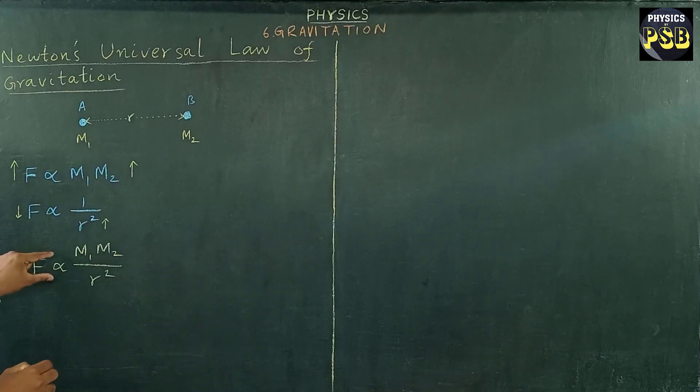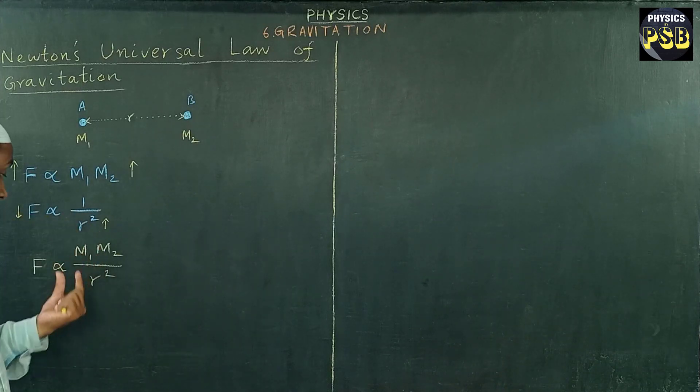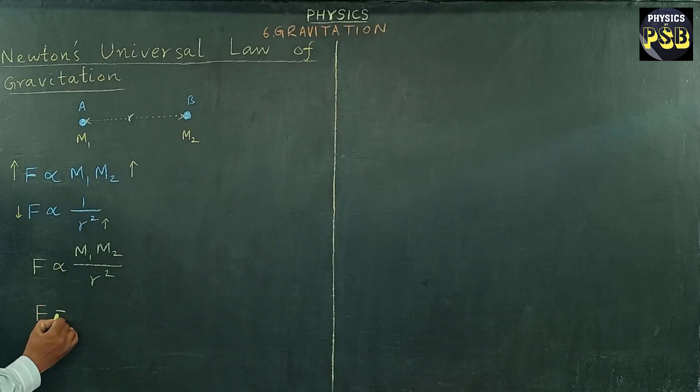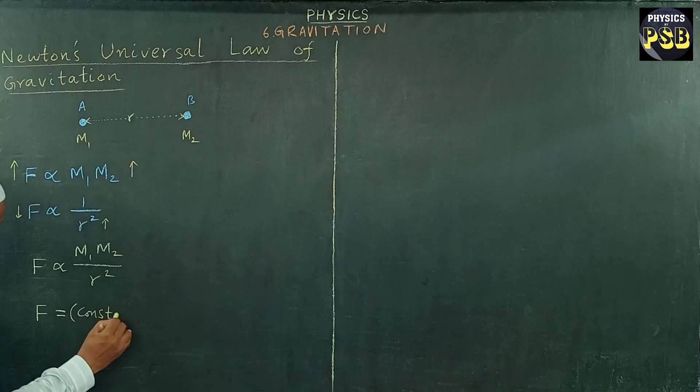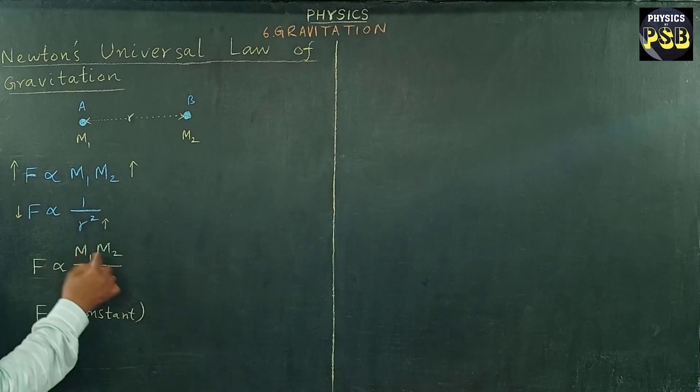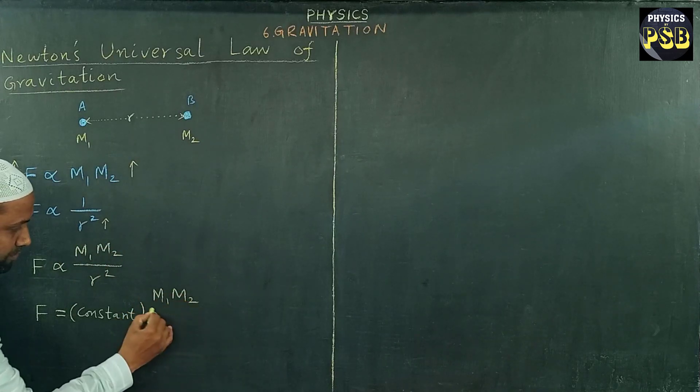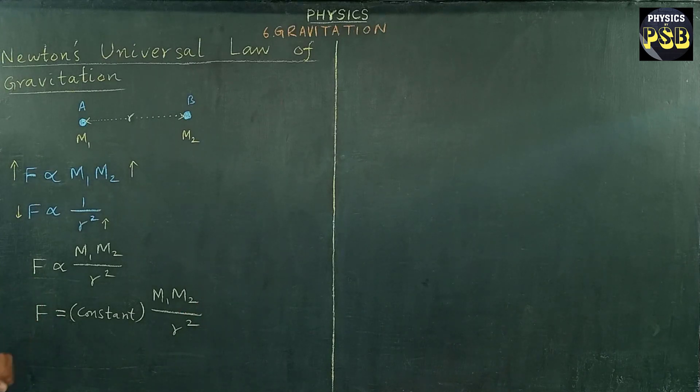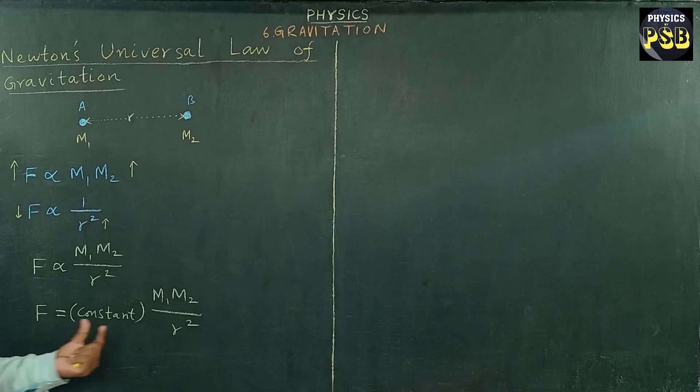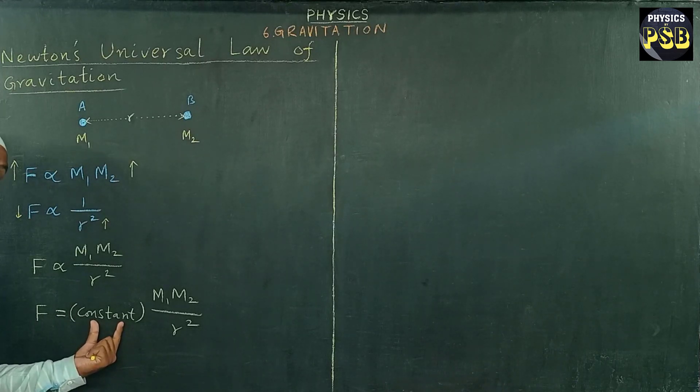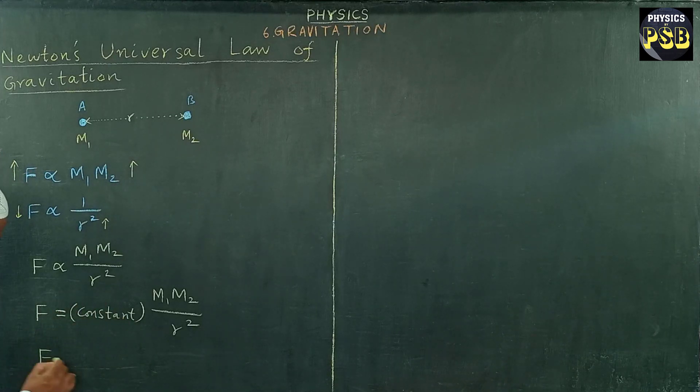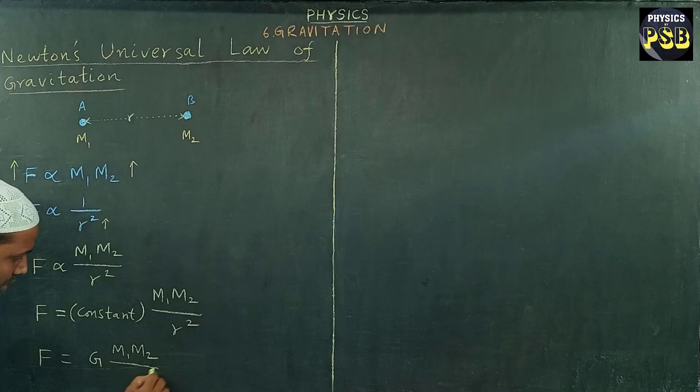When we remove proportionality, we have to include a constant along with equal to sign. So I am going to remove this proportionality, then the place of proportionality I use equal to sign, then I need to include a constant here. To make my work easy, I am going to give some name to this constant. This proportionality constant is G. So F equals G M1 M2 upon R square. Here G is proportionality constant and it is nothing but gravitational constant.